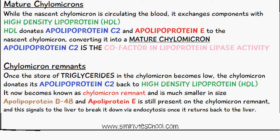At this point the chylomicron donates apolipoprotein C2 back to the high density lipoprotein. Once this happens it becomes known as a chylomicron remnant, and it's much smaller in size. Apolipoprotein B48 and apolipoprotein E are still present on the chylomicron remnant, and these signal the liver to break it down via endocytosis once it returns to the liver.